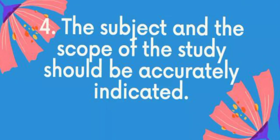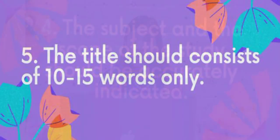Number four: the subject and scope of the study should be accurately indicated. This includes what the topic is about, who will be the participants or respondents of the study, where the study will be conducted, and when it will be conducted.